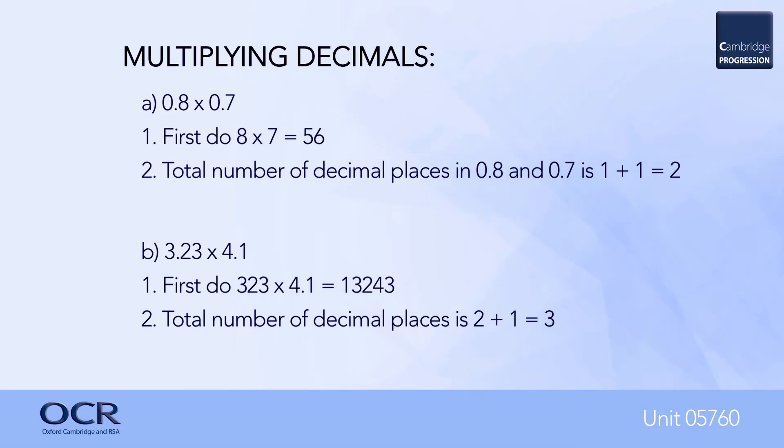Then count the number of decimal places in the two numbers to be multiplied. Next, put the decimal point in the answer obtained in the first step, so that the final answer has the same number of decimal places found in the second step.